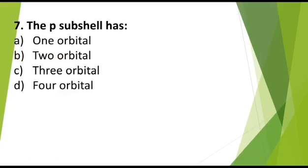MCQ number 7: The P-sub-shell has Option A: 1 orbital, Option B: 2 orbitals, Option C: 3 orbitals, Option D: 4 orbitals. Correct answer is 3 orbitals.